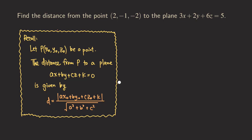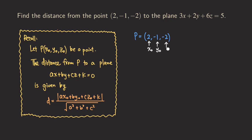Now let's try to do this problem. First we are going to start by writing down the point. The point is two, negative one, negative two. So we can call this point P. So P is (2, -1, -2). This point is our point P, and then X-zero, Y-zero, and Z-zero are really just those three values right here. So we can label them: X-zero, Y-zero, Z-zero.